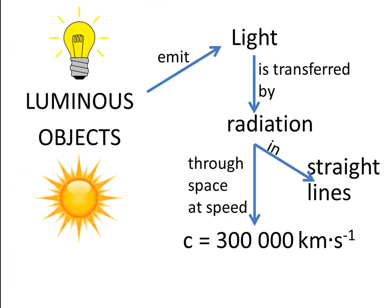So to recap, luminous objects shine, they give out, they emit light. That light travels away from the luminous object in the form of radiation, which means in the form of waves.